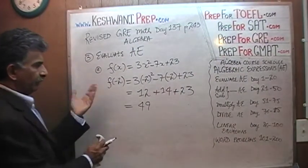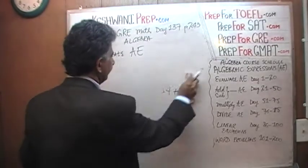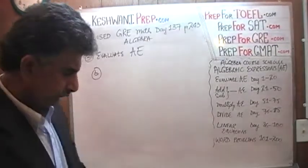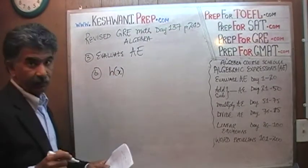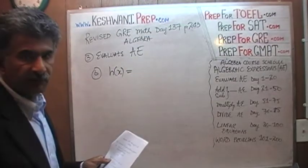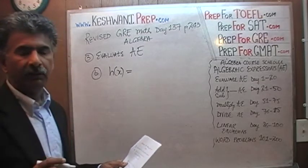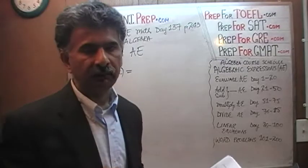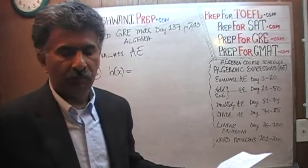Let's do the next one — part B. Your work should look like this; keep it clean and organized. The next function is given a different name: they're calling it h. It's a new function, so it gets a new name. You can't call all functions by the same name — it causes confusion. Each function should have its unique name in a given setting.